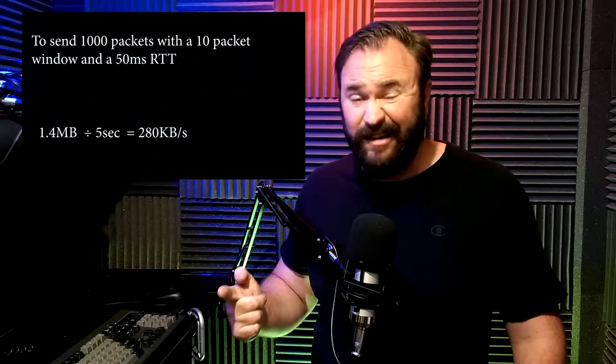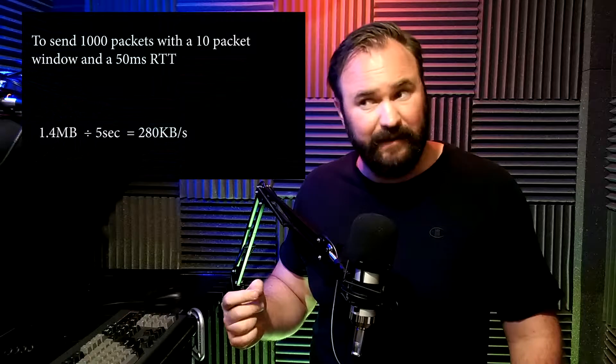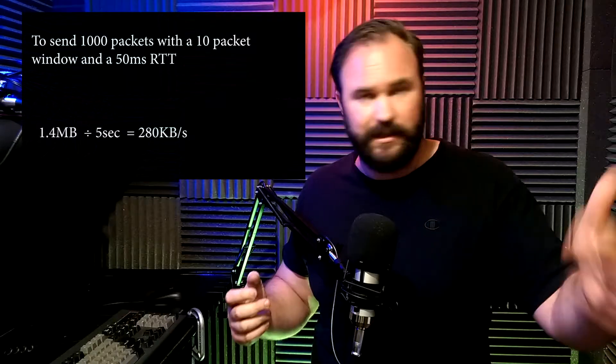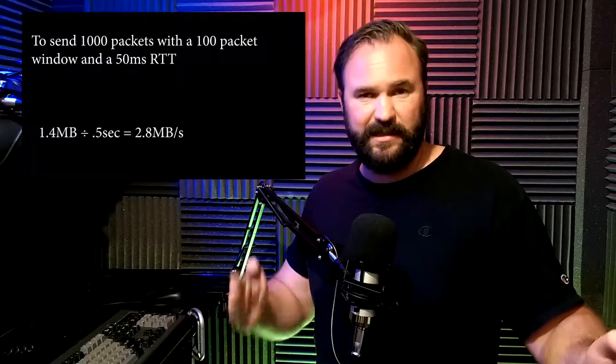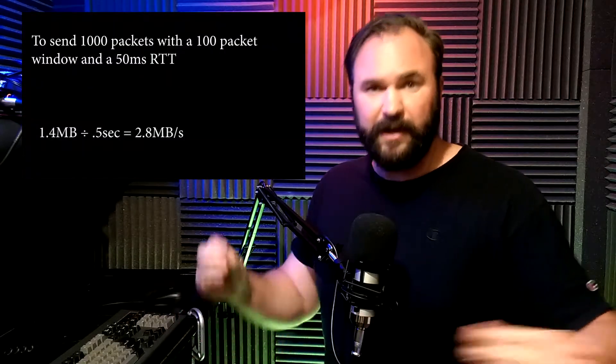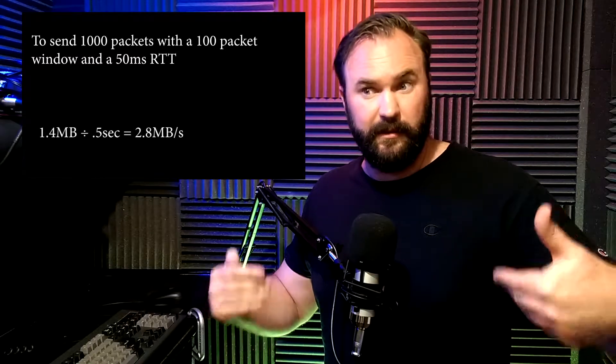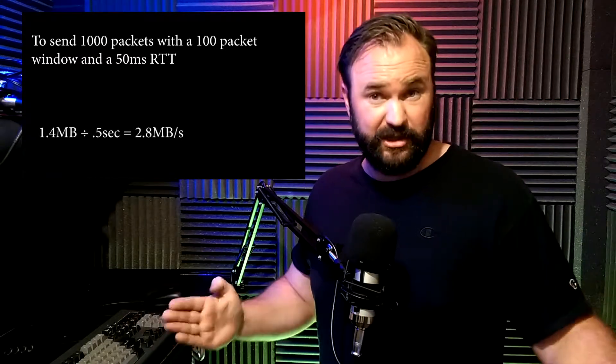That's not great. Now let's say you have a window size of 100 packets. You only have 10 round trip times — 10 × 50ms is 500 milliseconds. So instead of taking five seconds, it now takes half of a second to send the same amount of data. The bigger the window size, the more throughput, the faster things go.